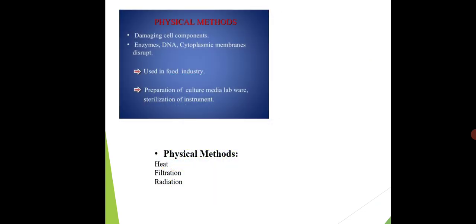Coming to the next slide — physical methods. What do physical methods actually do? They damage cell components, including pathogenic components. They also damage enzymes, DNA, and the cytoplasmic membrane — disrupting or destroying these key cellular structures.